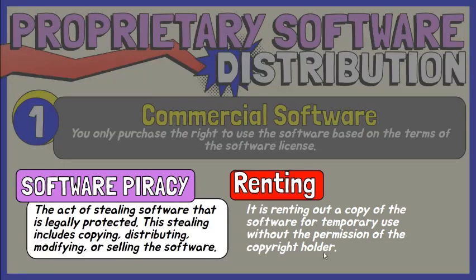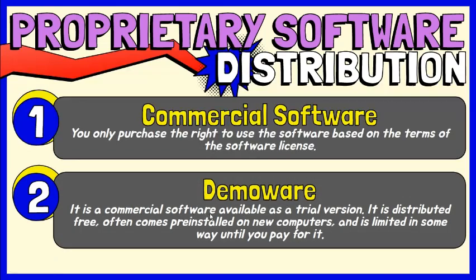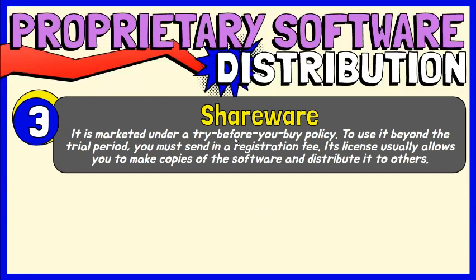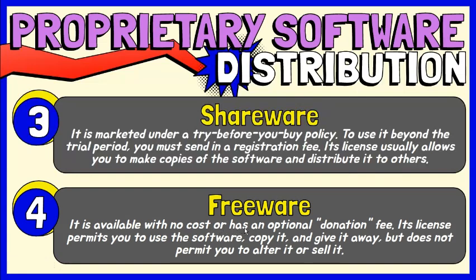Some commercial software is available as a trial version, called Demoware. Demoware is distributed free and often comes pre-installed on new computers, but is limited in some way until you pay for it. Shareware is copyrighted software marketed under the Try Before You Buy policy. It includes a license that permits you to use the software for a trial period, and to use it beyond that period, you must send in a registration fee. A shareware license usually allows you to make copies and distribute it to others. Freeware is software available at no cost or with an optional donation fee. Its license usually permits you to use the software, copy it, and give it away, but does not permit you to alter or sell it.